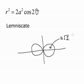We see that when theta is zero and when theta is equal to pi, cosine of 2 theta gives us 1. So r is a times the square root of 2. So on each side of the lemniscate, the line through the center of it is of length a root 2.